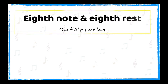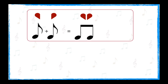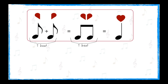Next are the eighth notes. An eighth note and an eighth rest are one half a beat long. Eighth notes often come in pairs — the two notes can be either single or beamed eighth notes. Two eighth notes together equal one beat. That equals one beat, just like a quarter note. To count eighth notes, we use one number for the first note and a plus symbol — said as 'and' — for the second one: one-and, two-and, three-and, four-and.